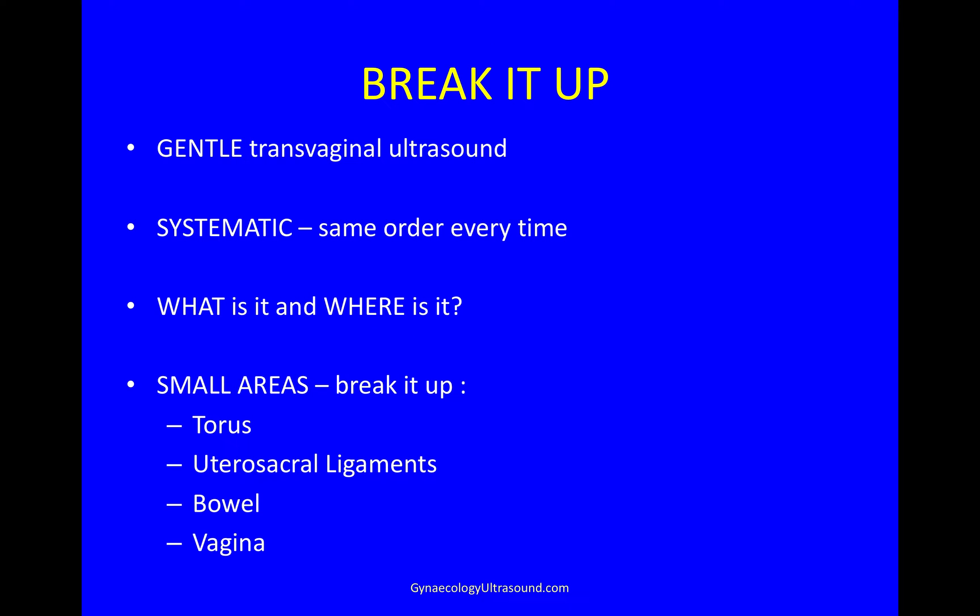When a scan is complicated, I like to break it up. Always do a very gentle transvaginal ultrasound and be more or less systematic every time. When you find something, think: what is it and where is it? In small areas, break it up into torus, uterosacral ligaments, bowel, and vagina.